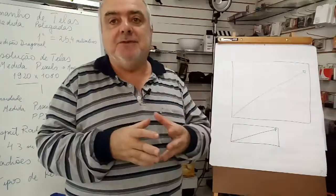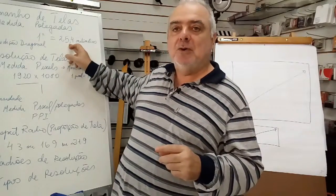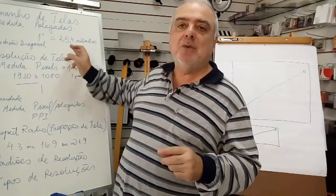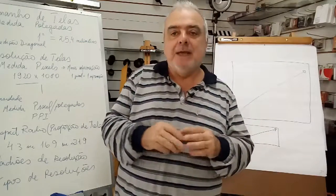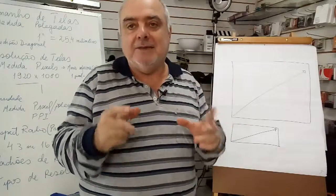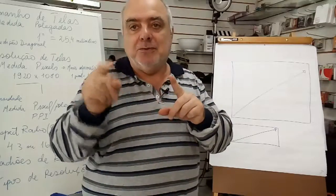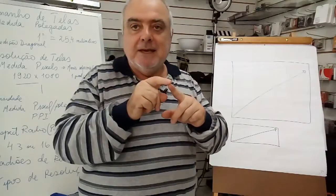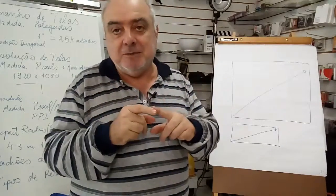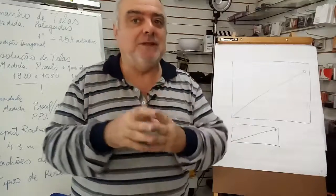Por isso que é importante você saber que uma polegada equivale a 25,4 milímetros ou 2,54 centímetros. Então, cada vez que você pensar em uma polegada, você tem que fazer o cálculo e multiplicar por 25,4 milímetros para saber quantos milímetros ou por 2,54 centímetros para saber quantos centímetros nós estamos tratando. Mas tem um detalhe importante.